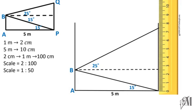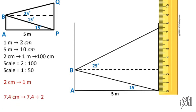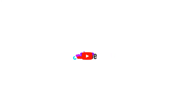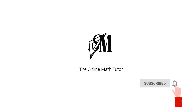Now our question is to find the height of the goal post. Measuring P to Q on the scale diagram gives 7.4 centimeters. Using our scale, where 2 centimeters represents 1 meter, we calculate: 7.4 ÷ 2 = 3.7 meters. So the height of the goal post is 3.7 meters. I hope you understood how to use angle of elevation and angle of depression in scale diagrams. See you with another Smart Math tip — until then, goodbye!